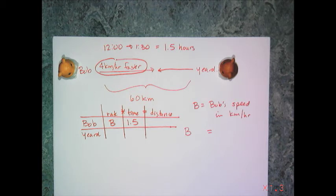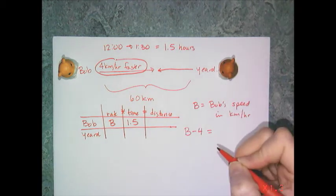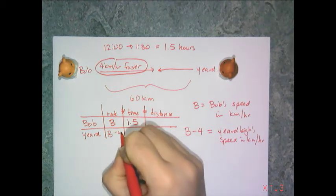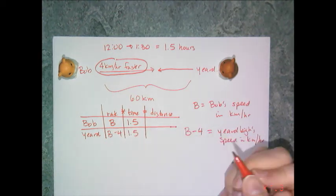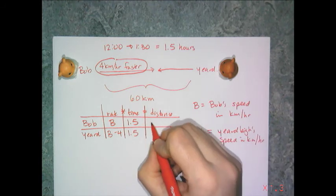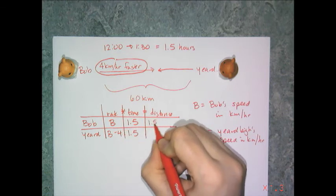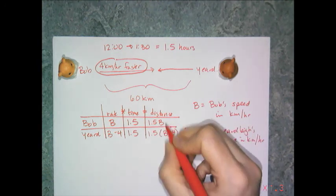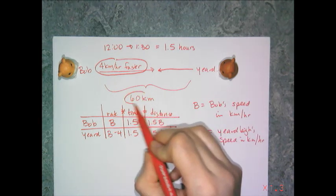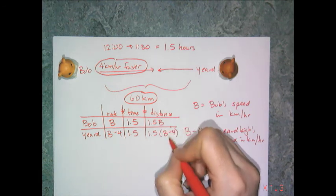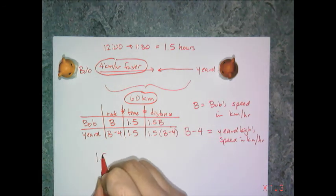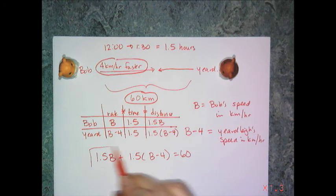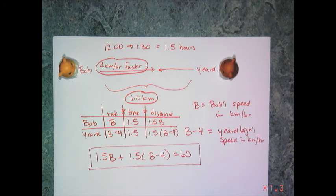I won't create a separate variable for Yardley because I have information relating their two speeds. Bob was going four kilometers per hour faster than Yardley, so Yardley's speed is B minus four. She also travels 1.5 hours. Bob's distance is 1.5B; Yardley's is 1.5 times (B minus four). Using the fact that their distances must sum to 60 km: 1.5B plus 1.5(B minus four) equals 60. Solving gives Bob's speed, and subtracting four gives Yardley's.